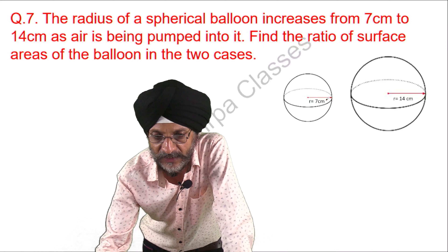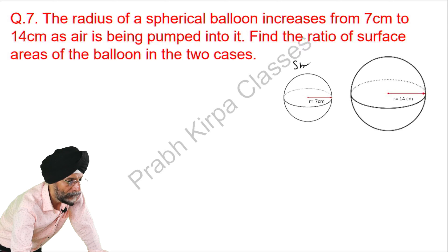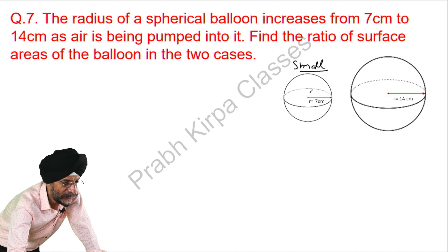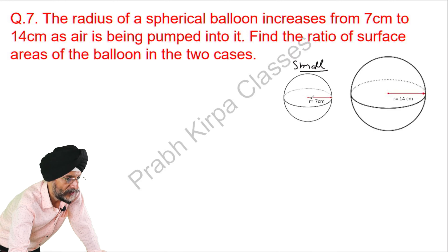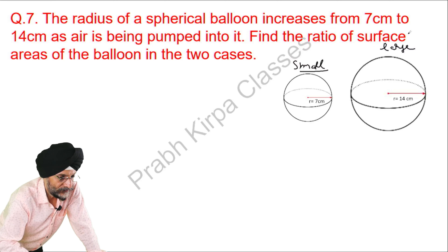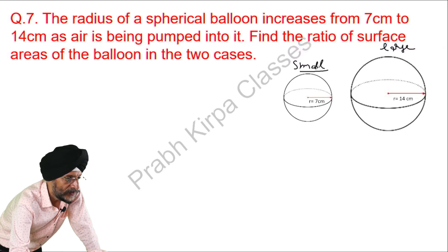You can see here that this is one sphere which is a small balloon and it has the radius of 7 centimetres. Now the air has been pumped into it and its radius has increased to 14 centimetres. This is the large balloon. Now we have been asked to calculate the ratio of surface area of the balloon in the two cases.